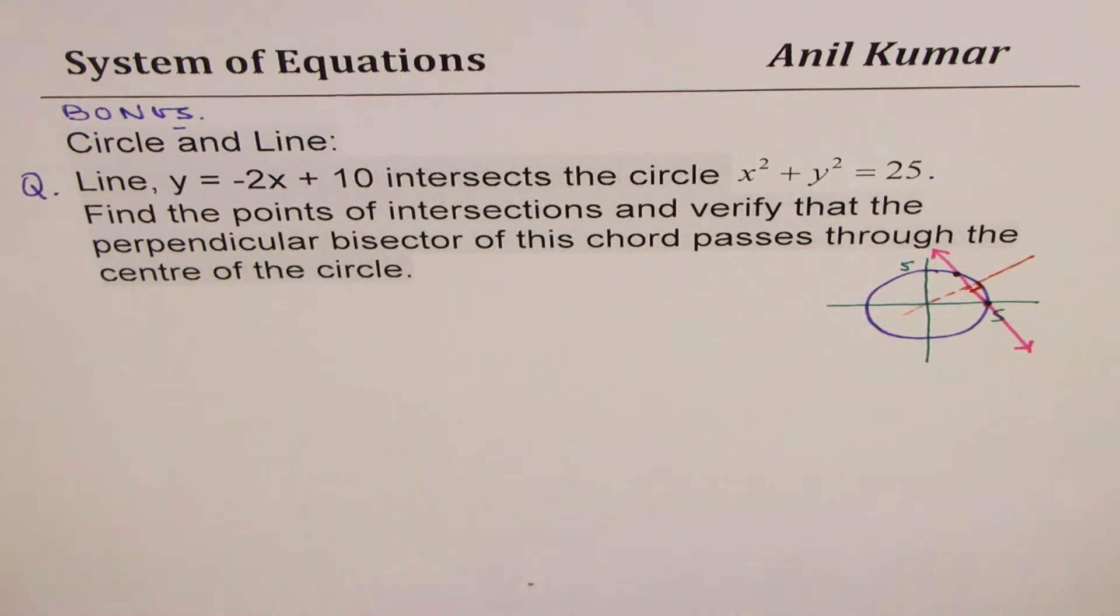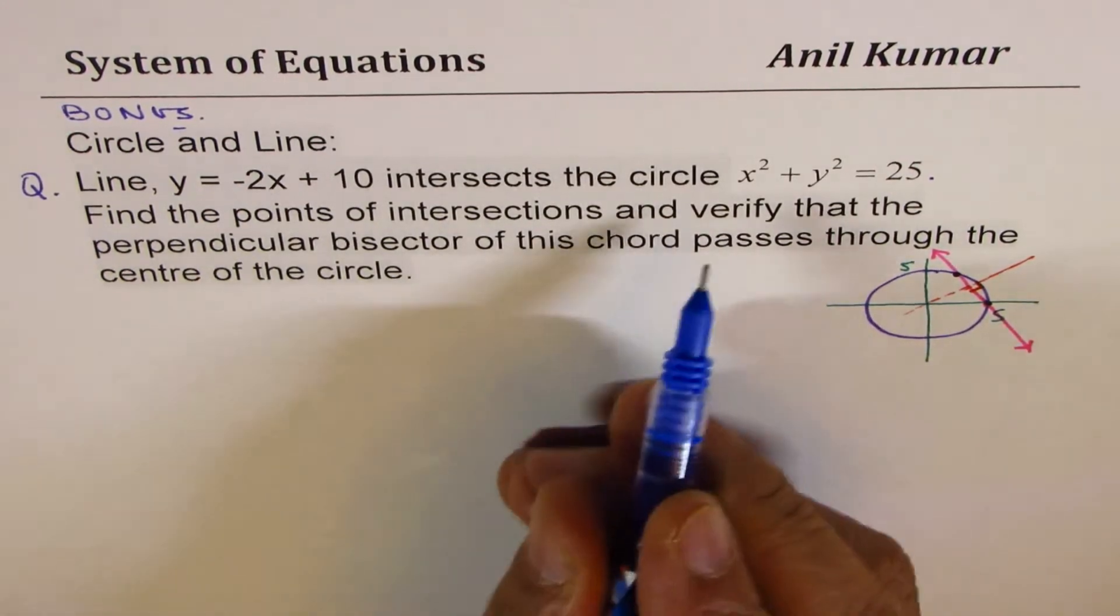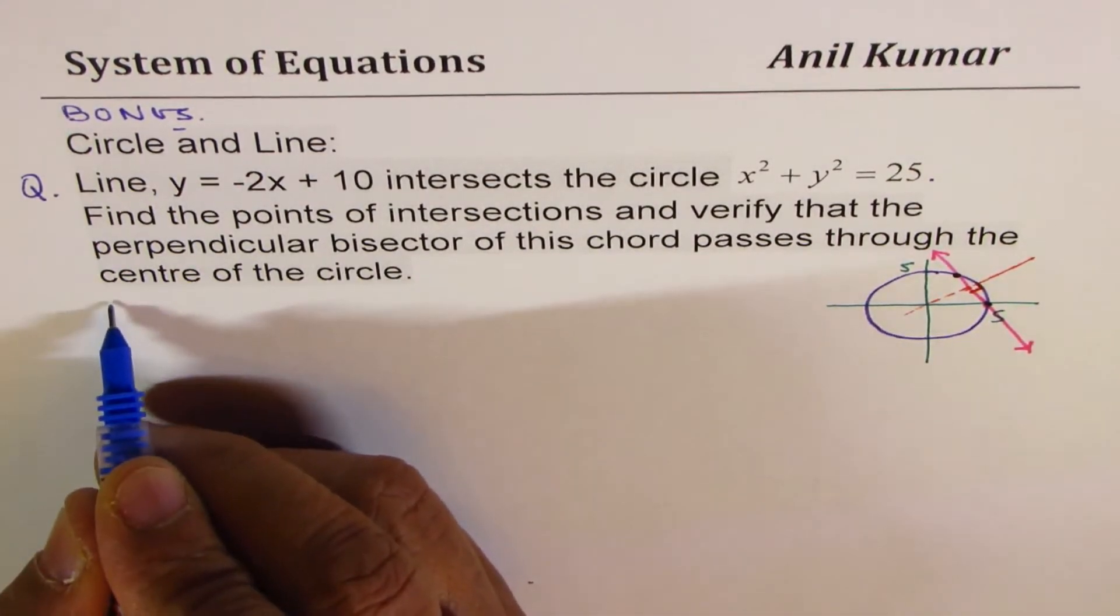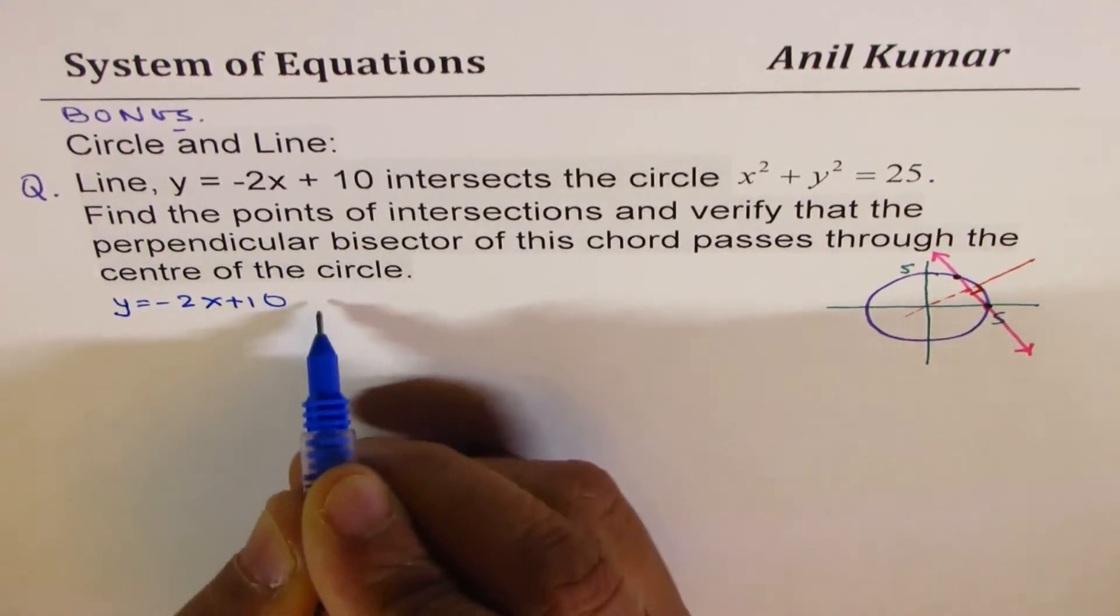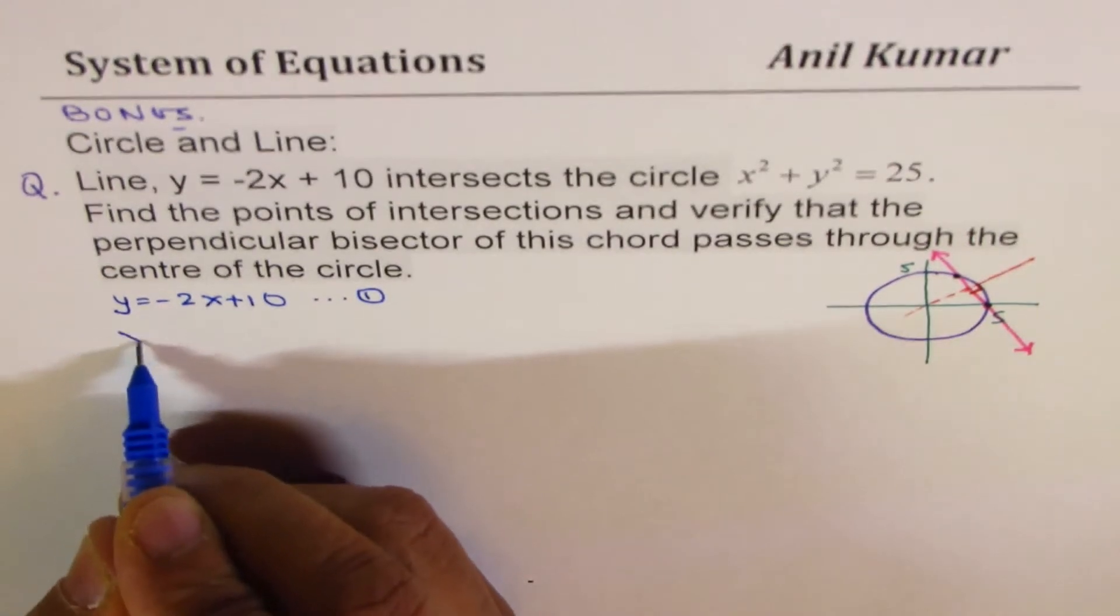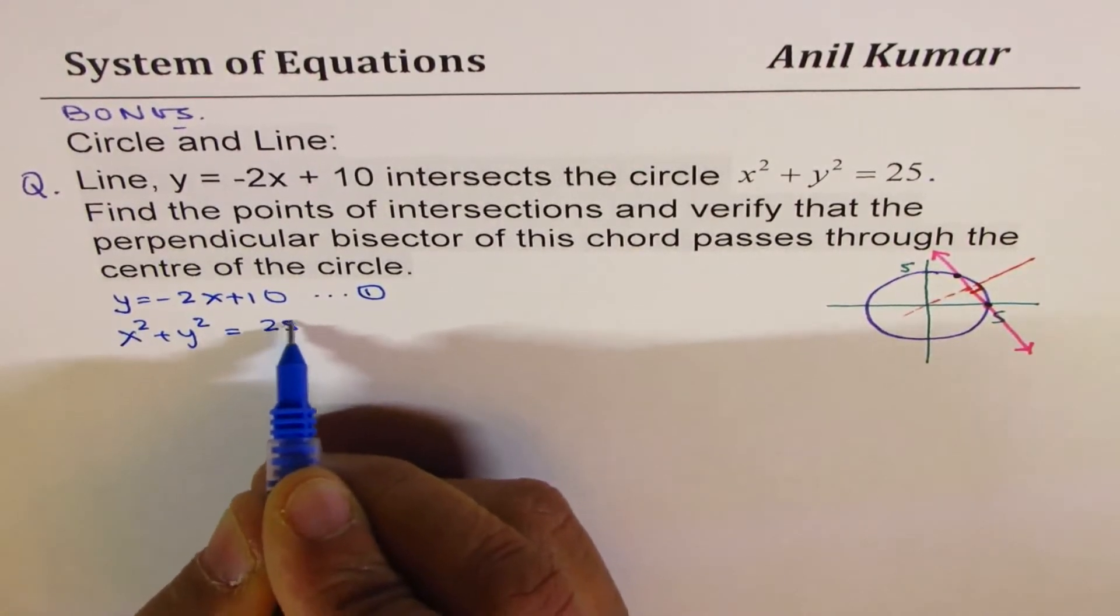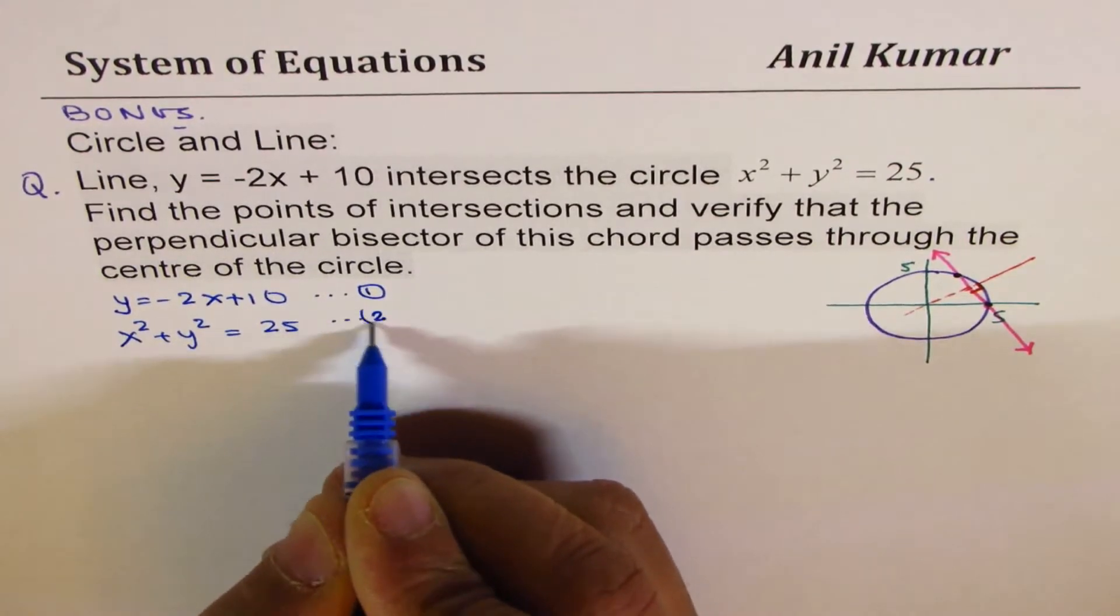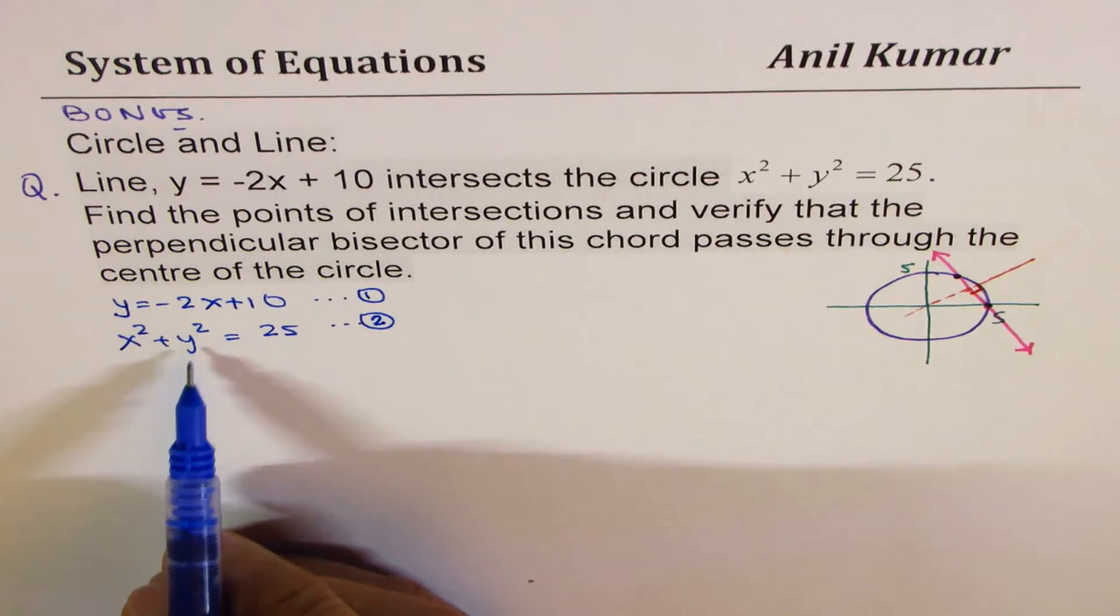Let's see how to solve such a question. So let us find these two points first. We are given the equation y equals minus 2x plus 10. In this problem, we have equation x squared plus y squared equals 25. We'll call this as our equation number 2.